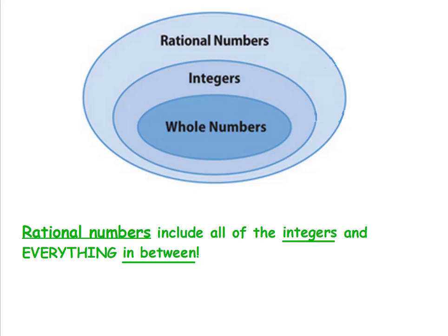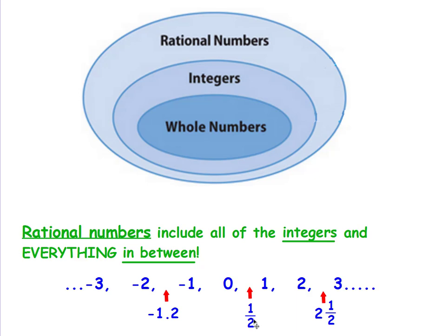Rational numbers include all of the integers and everything in between. The whole numbers and their opposites are both integers. Everything in between would be, for example, one half — it's between the whole numbers zero and one, so the only thing it is is a rational number. If you look at two and one half, it's between the whole numbers two and three, so it's not a whole number, it's not an integer, it's only a rational number. And if you look at negative 1.2, it's between the integers negative one and negative two, so it is only a rational number.